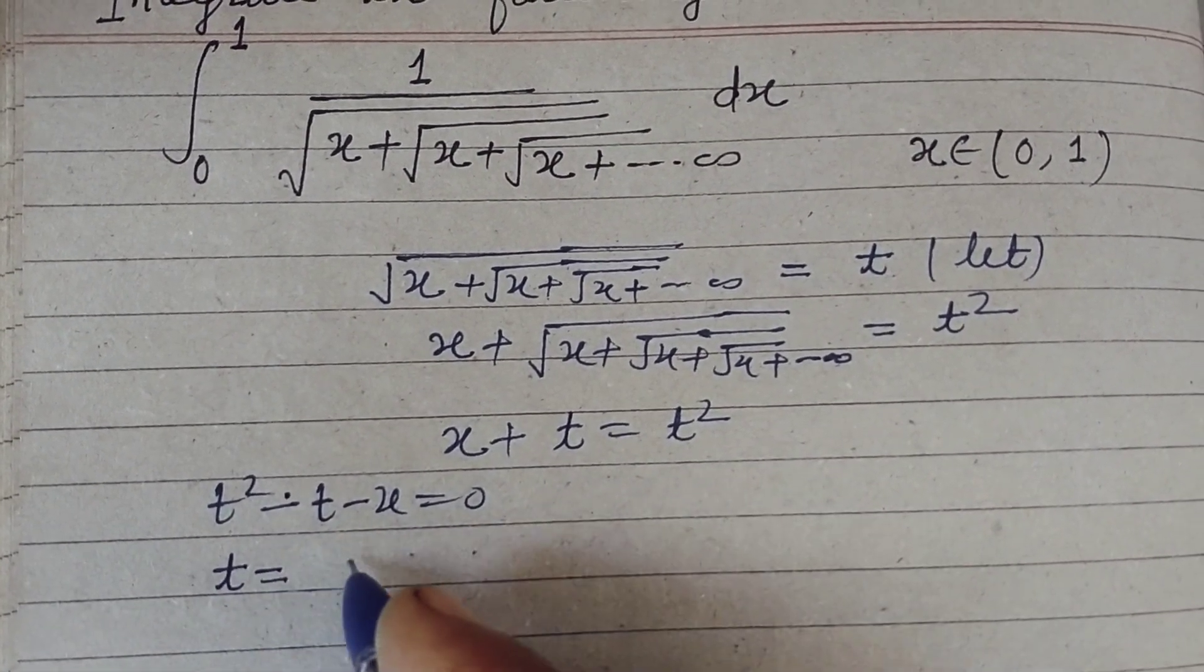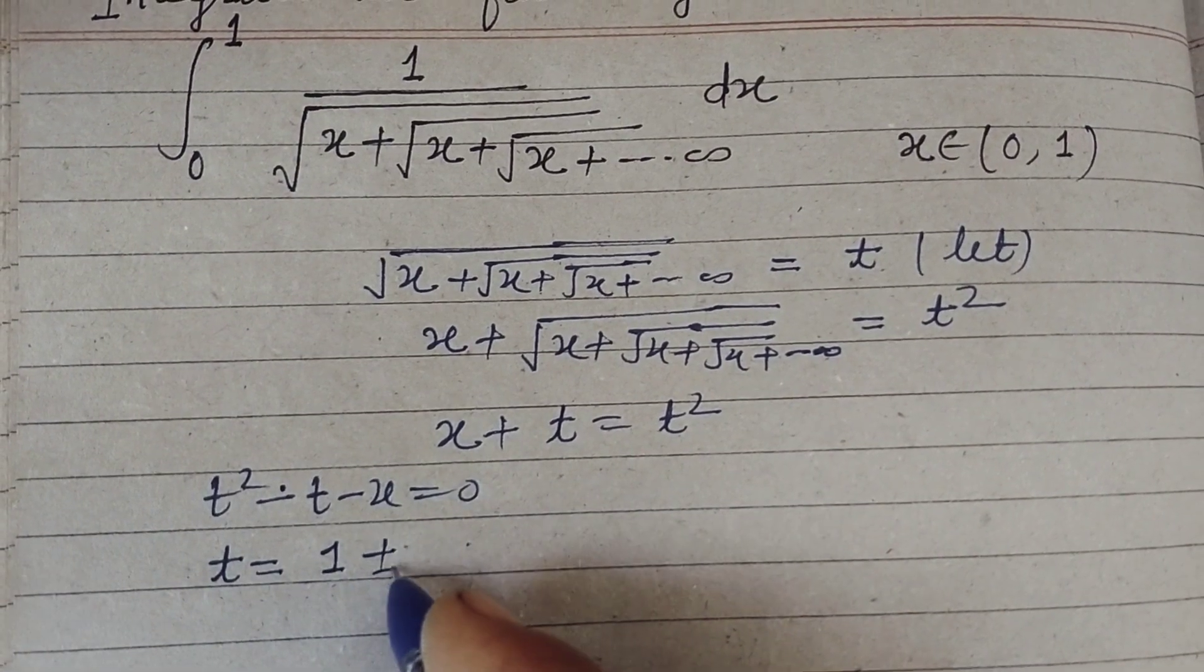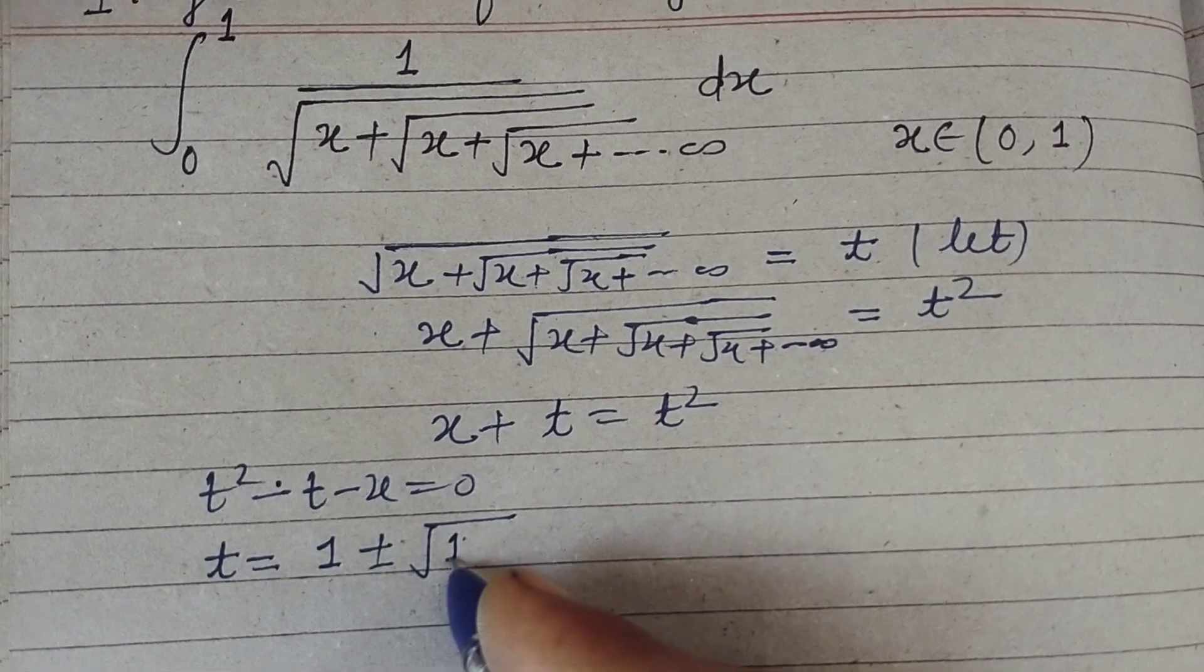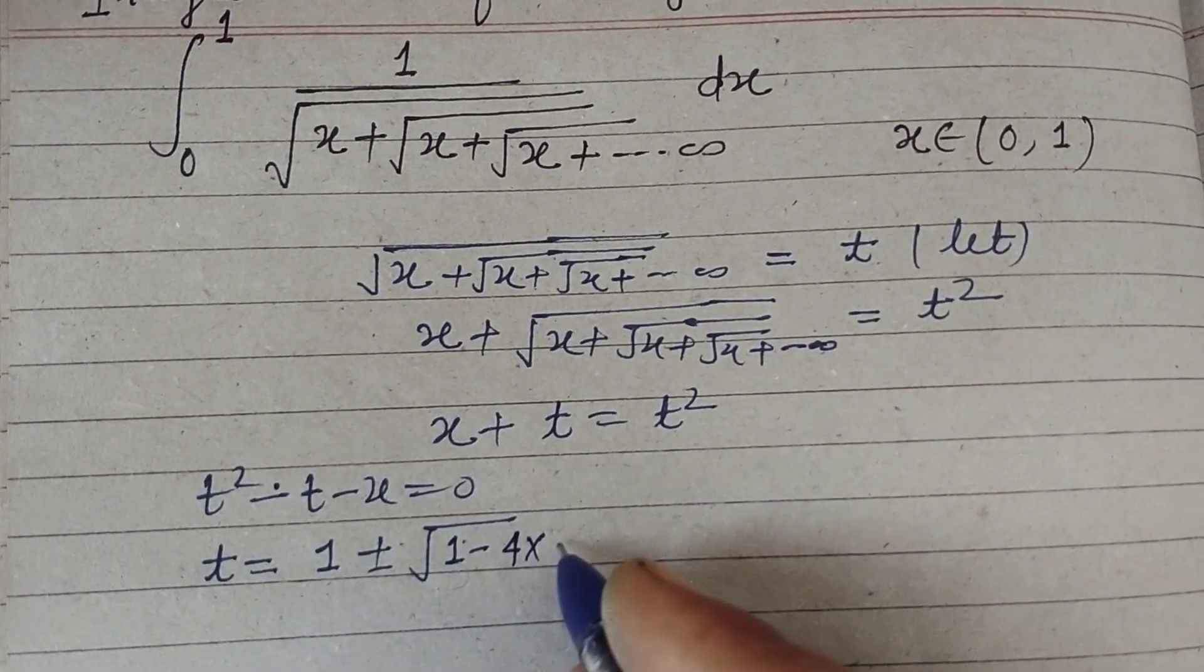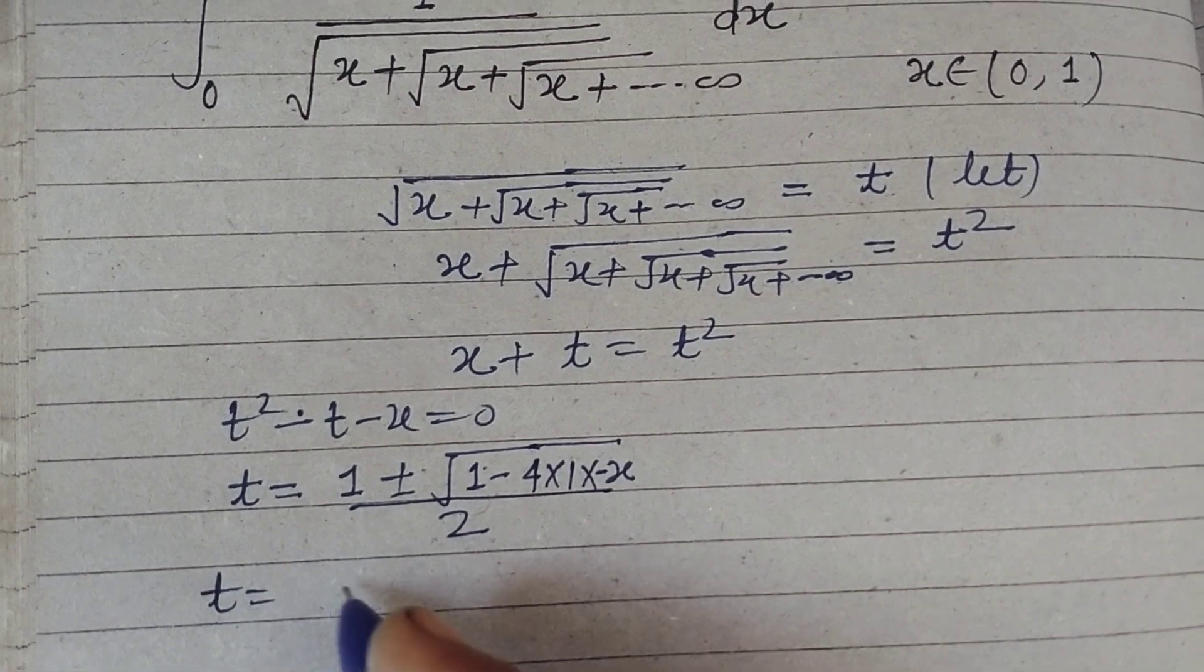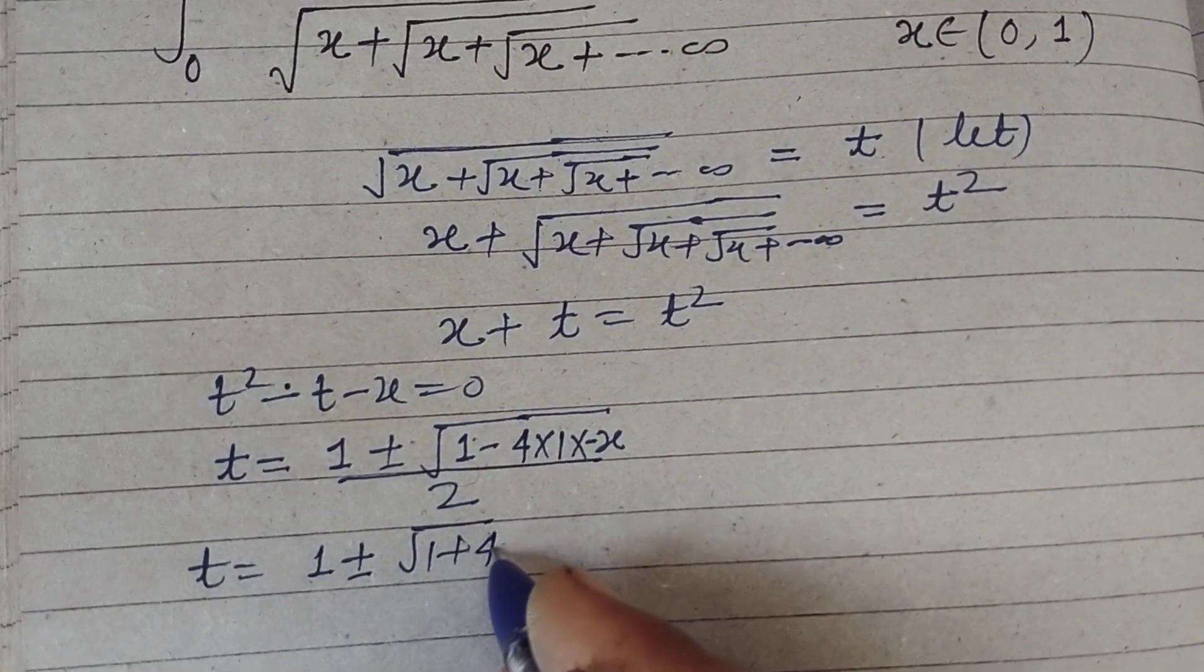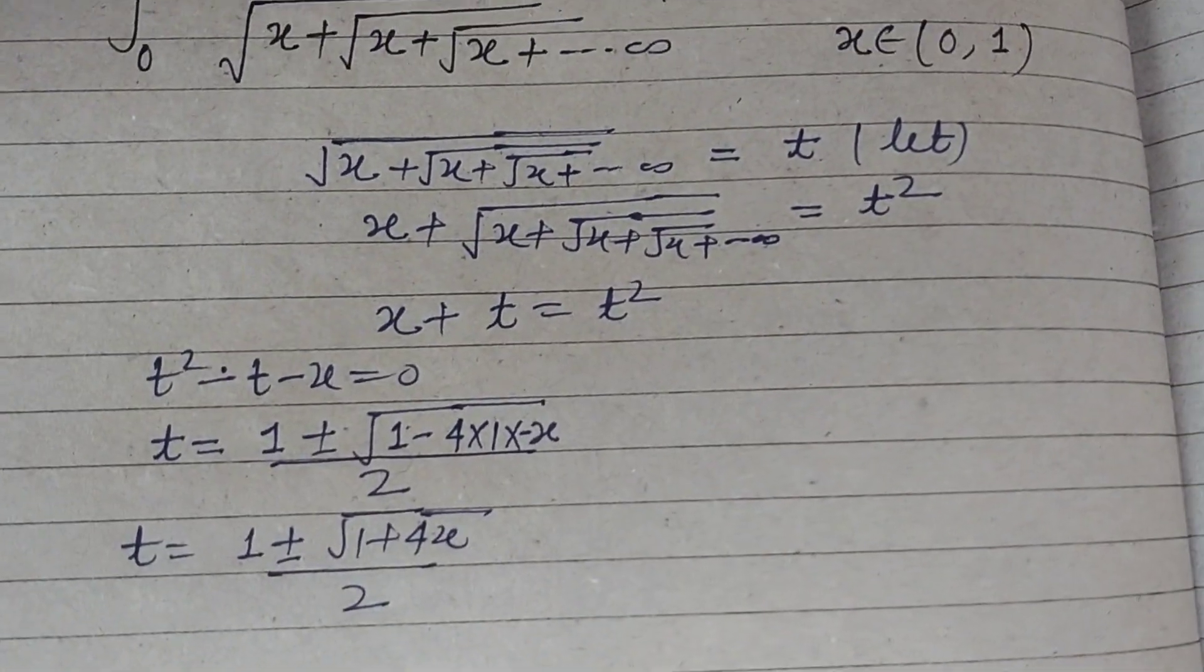Therefore t square minus t minus x equal to zero. Using quadratic formula we can find t which equals minus b, so this is minus one plus minus root of b square. B is one minus 4ac, so 4a is one and c is minus x upon 2a. Therefore t equals one plus minus root of one plus 4x upon two.